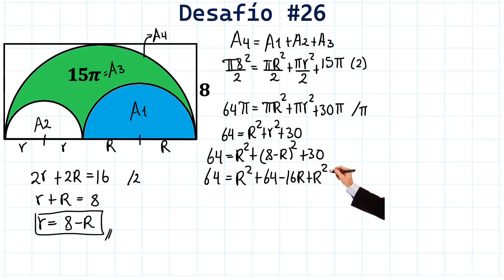Here we have, well, 30. Very well. And notice this 64 with this 64. Well, goodbye. Here we have 0. We have that plus R squared, plus R squared, 2R squared. Here we have minus 16R. And finally, plus 30.